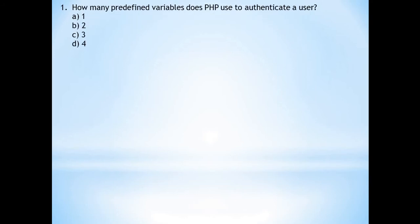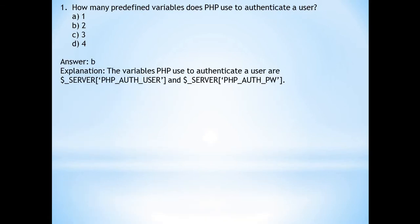First question: How many predefined variables does PHP use to authenticate a user? Answer is b, two variables. The variables are $_SERVER['PHP_AUTH_USER'] and $_SERVER['PHP_AUTH_PW'].